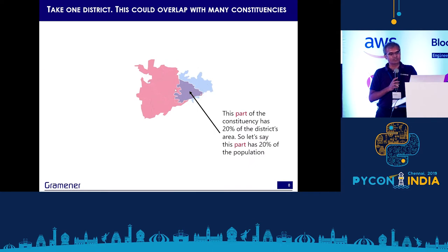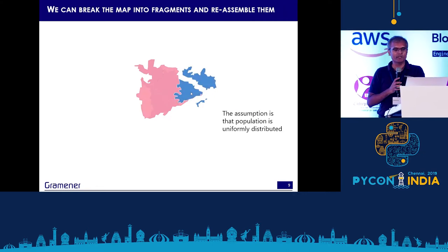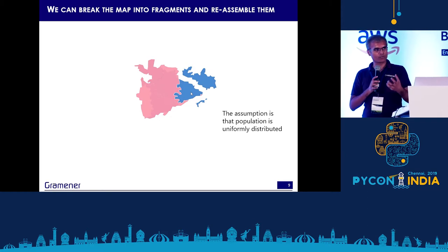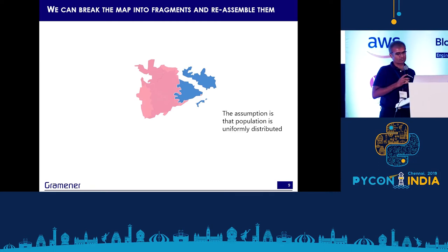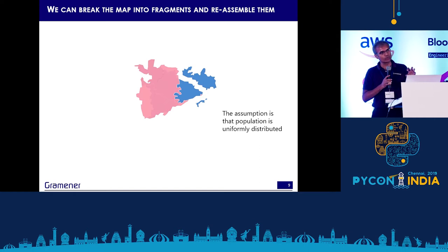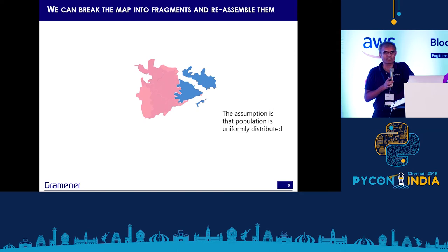Or let's take another constituency which overlaps with this district — only a portion of it overlaps, maybe about 20% of that district's population lives in that area. In other words, we are simply making an assumption that within a district, the population is uniformly distributed. Now what we can do is fragment each of these districts and constituencies by overlaying them and creating intersections, then reassembling those. This is a process I call reshaping the map.